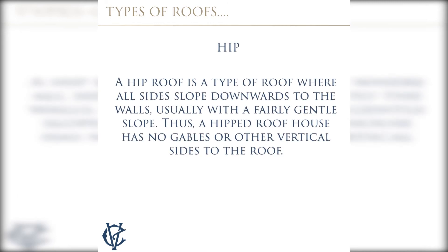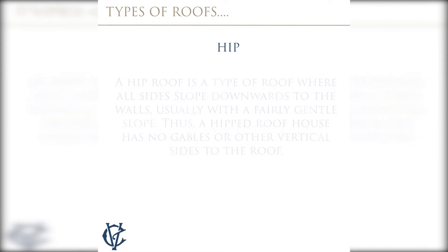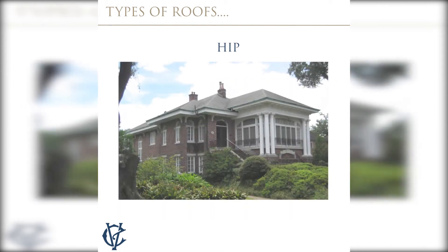A hip roof is a type of roof where all sides slope downwards to the walls, usually with a fairly gentle slope. Thus a hip roof house has no gables or other vertical sides to the roof.